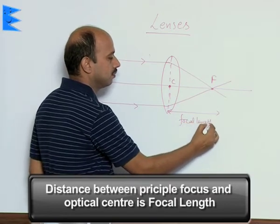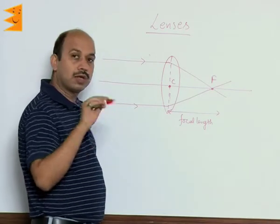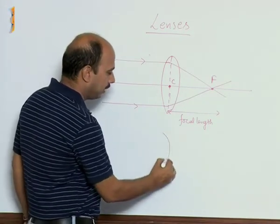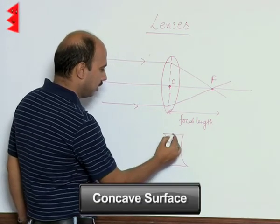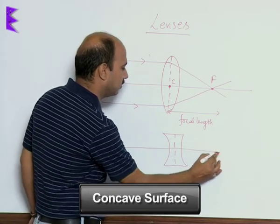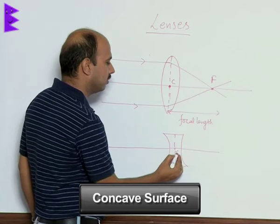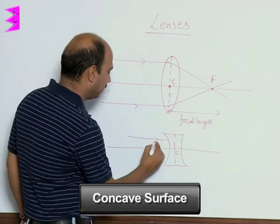Similarly we can take for concave - two concave surfaces in this way. This is a line which is passing through its center. This is your optical center. Here we can take two incident rays like this.